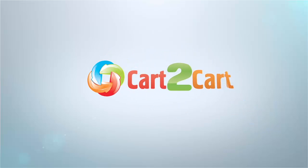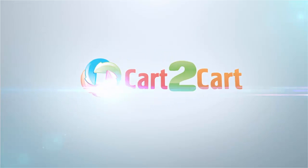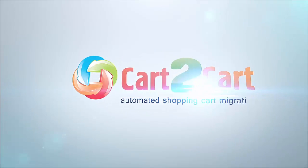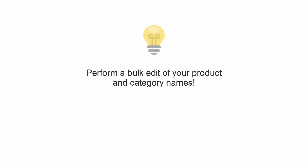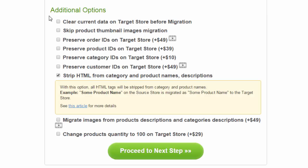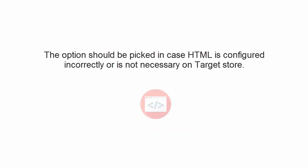Expand your migration possibilities with additional options from cart to cart. Perform a bulk edit of your product and category names. This additional option allows you to transfer names and descriptions of products and categories without HTML tags. The option should be picked in case HTML is configured incorrectly or is not necessary on the target store.